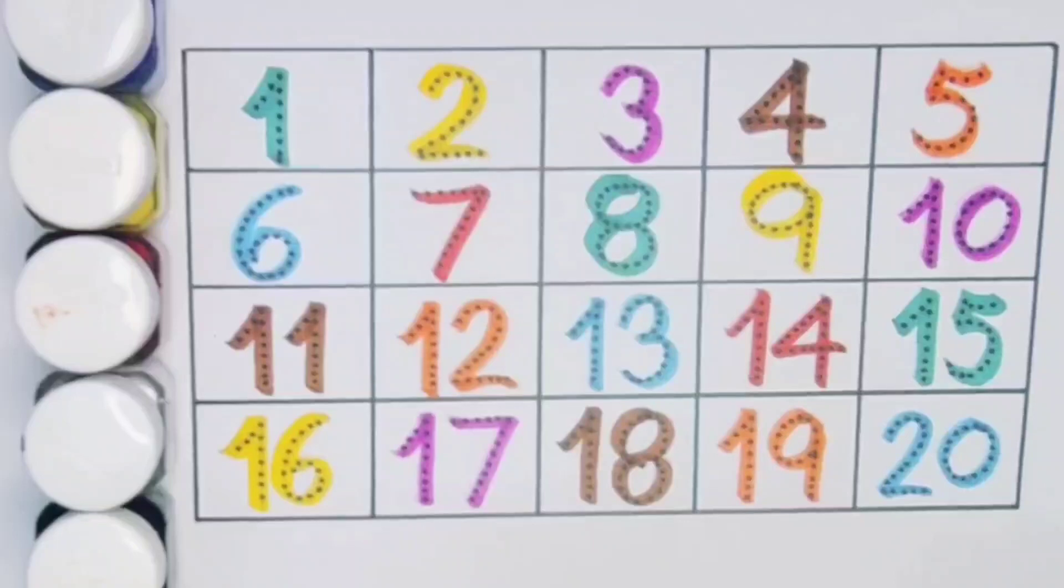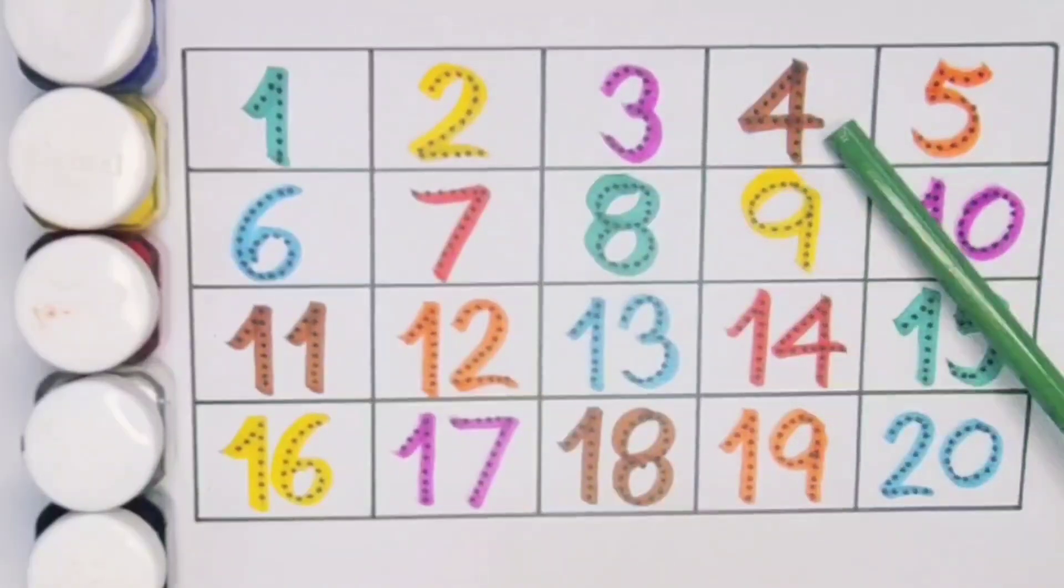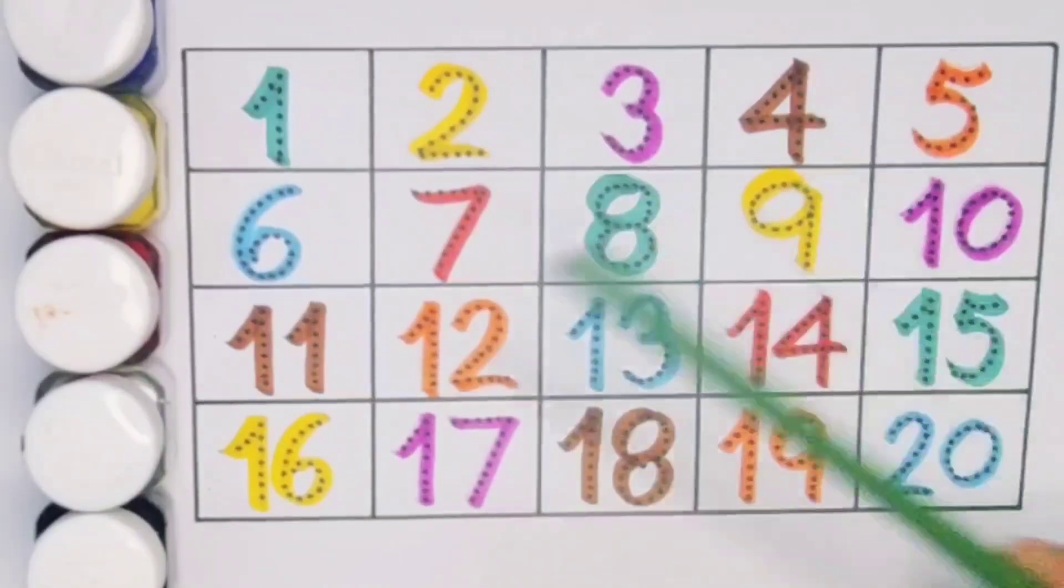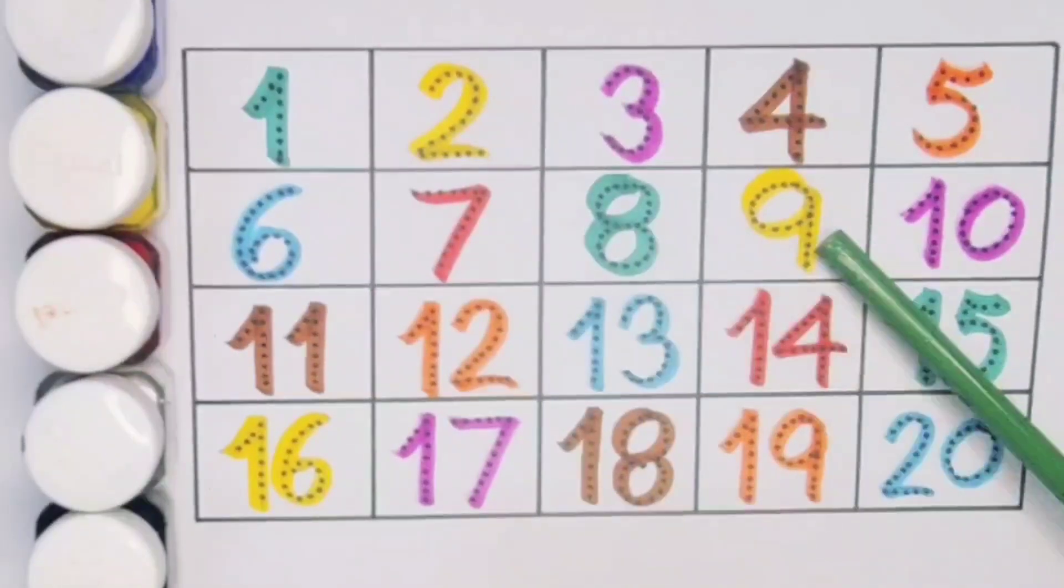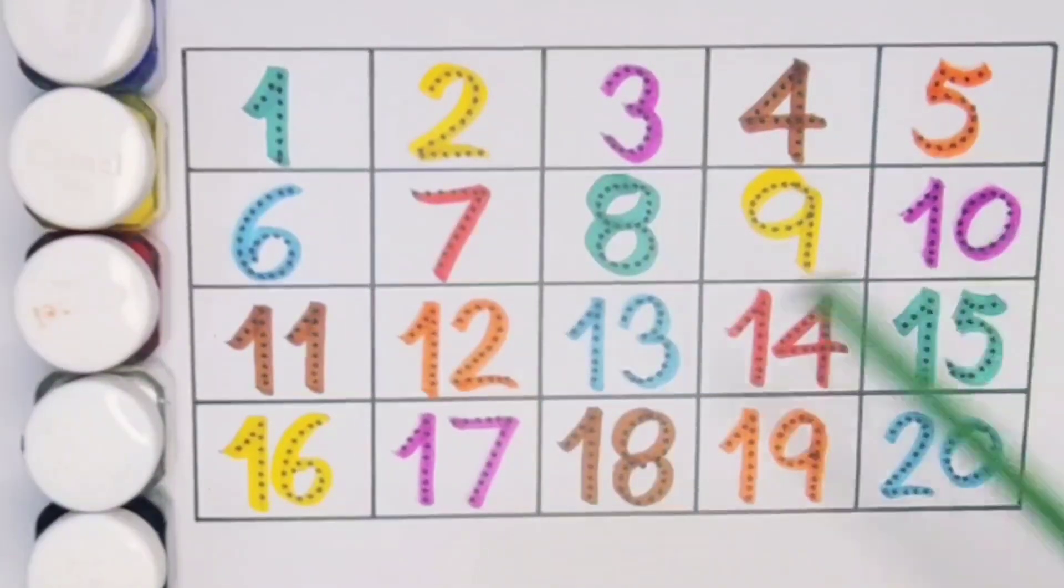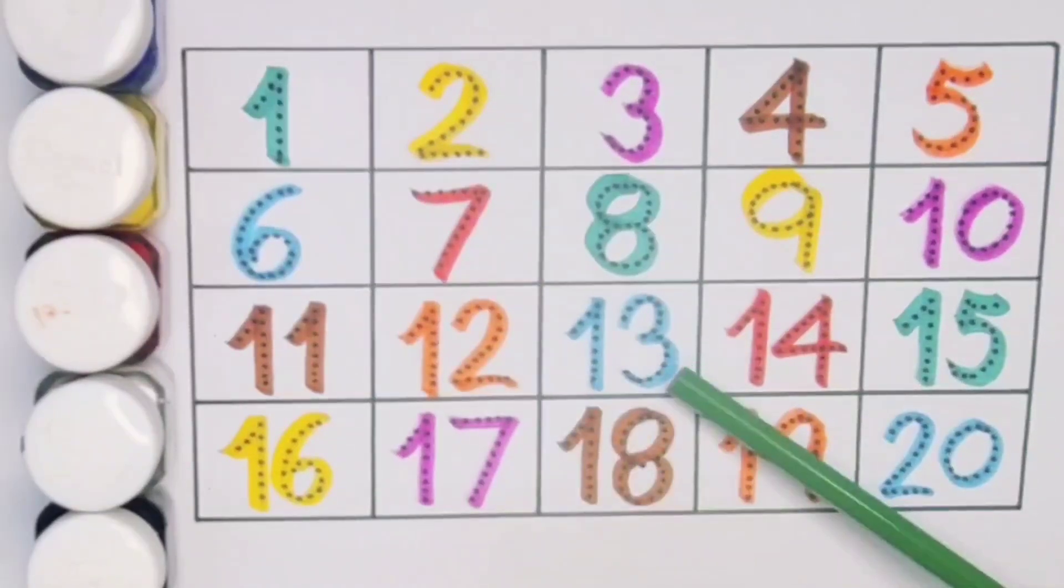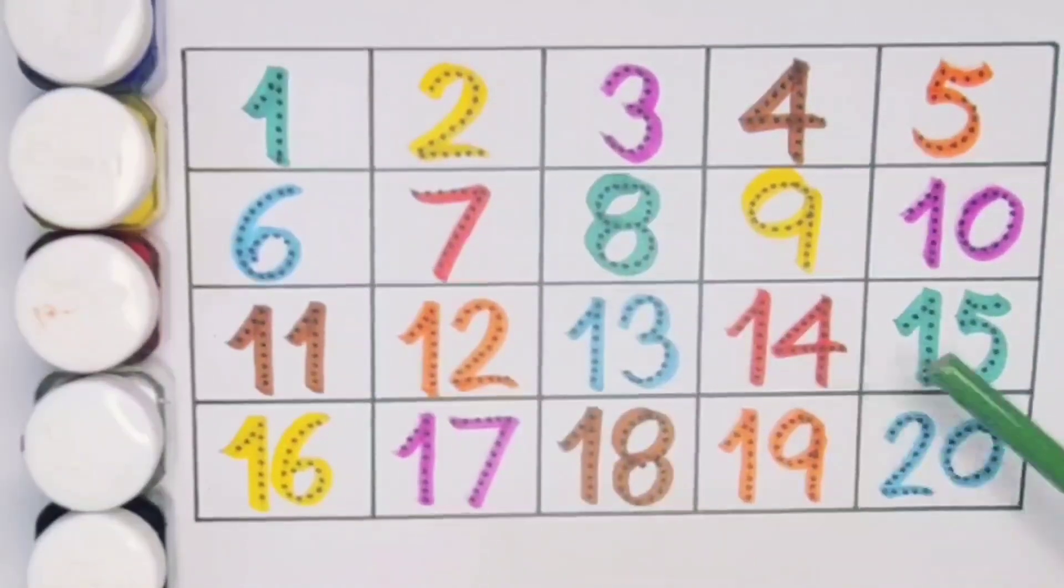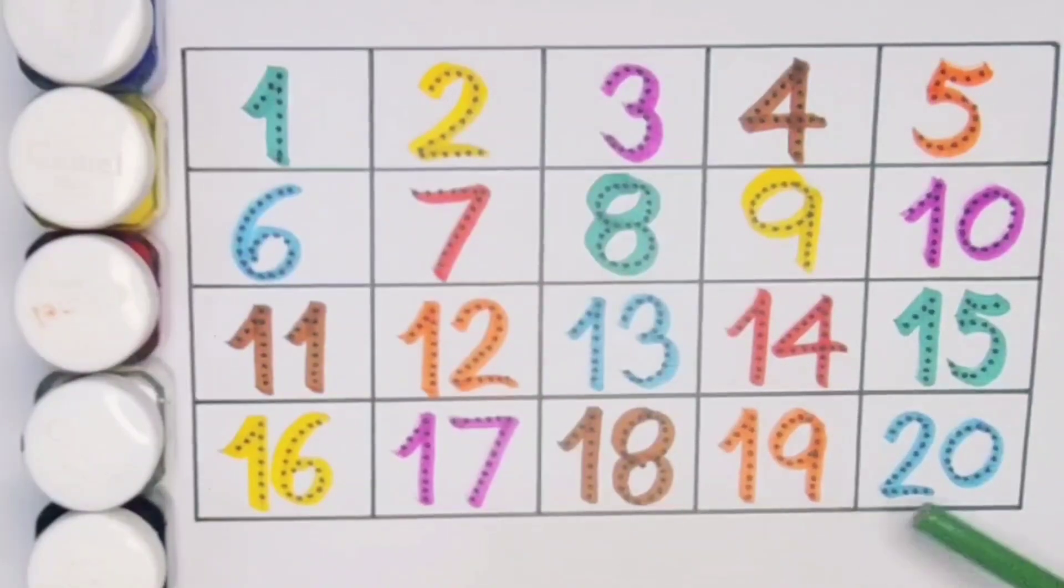What we learned: 1, 2, 3, 4, 5, 6, 7, 8, 9, 10, 11, 12, 13, 14, 15, 16, 17, 18, 19, 20.